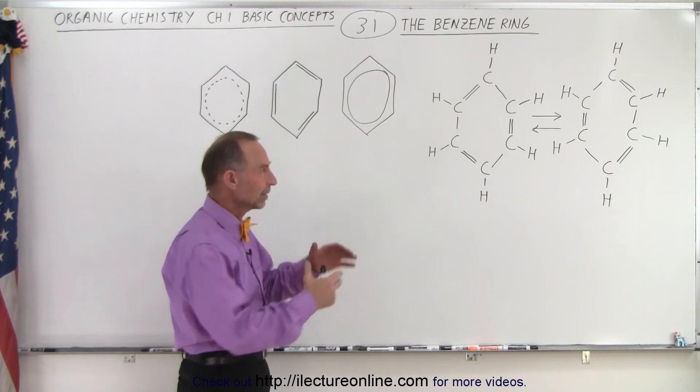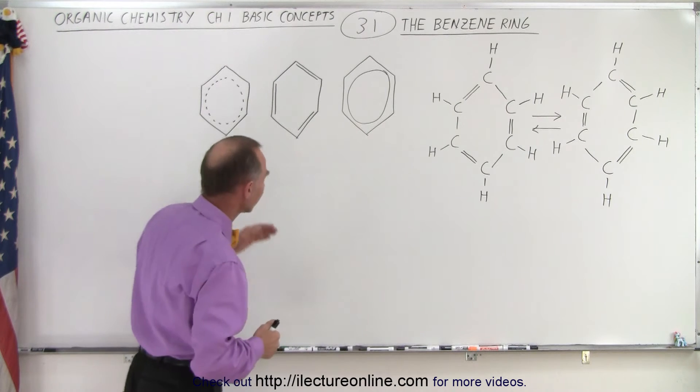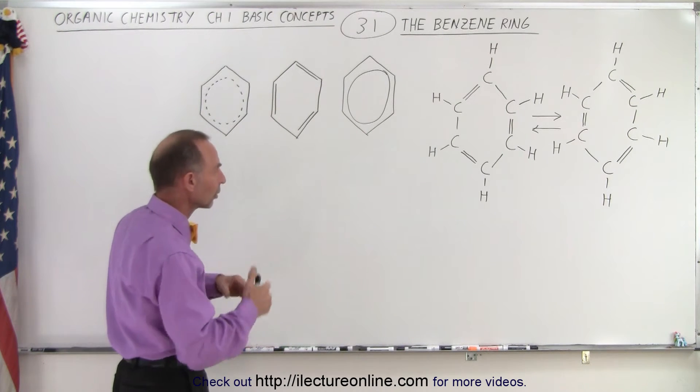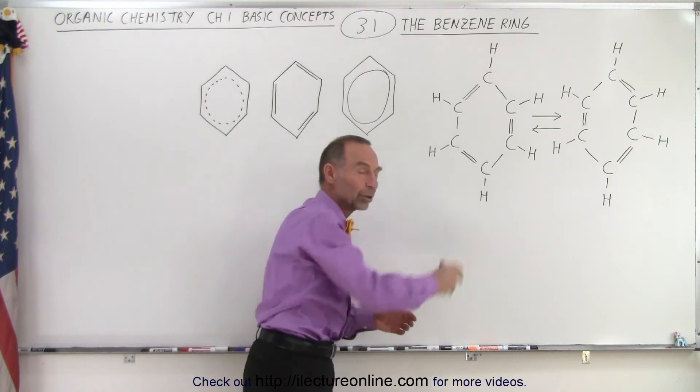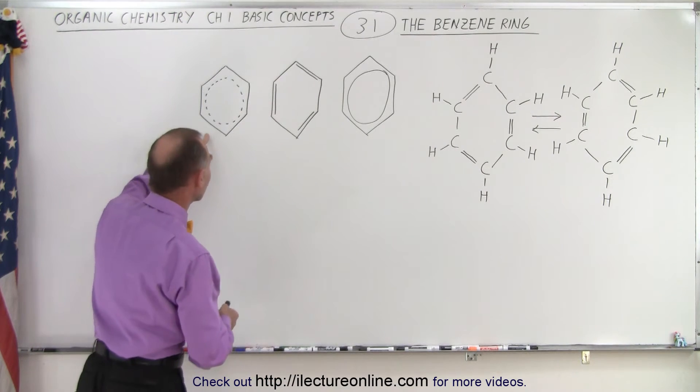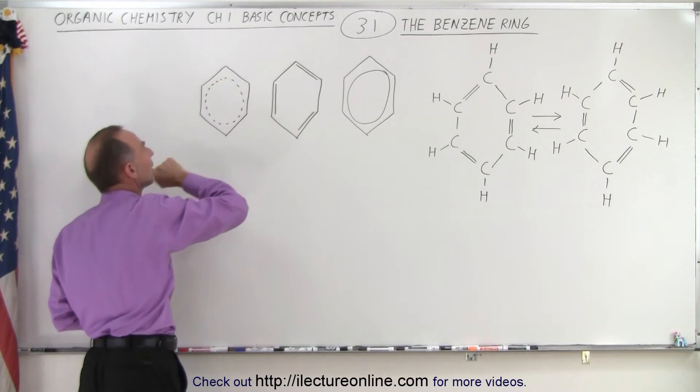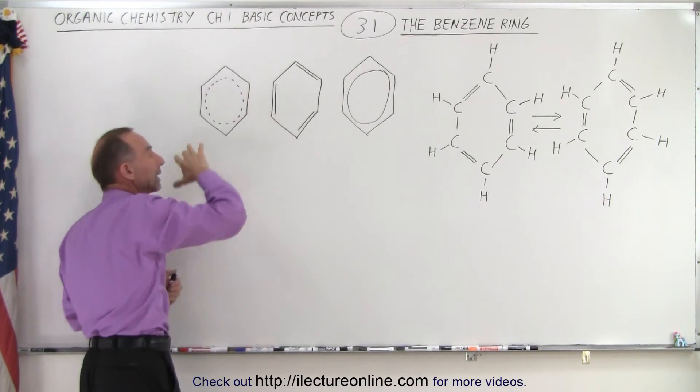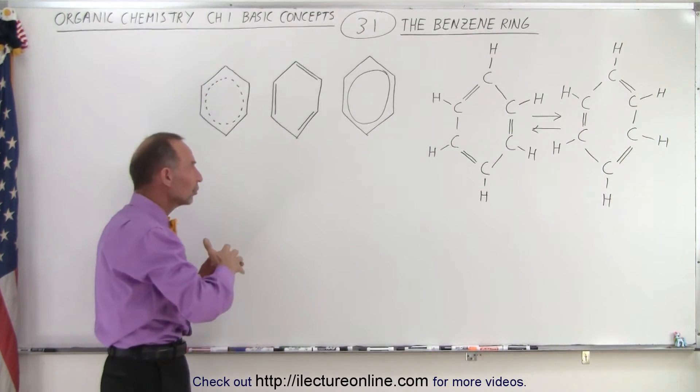Now to simplify the structure when you want to write down what it looks like, because this takes a lot of work, you can simplify the benzene ring symbol by making it look like this. Here you indicate that there's six carbons and this indicates that it's an alternate single to double bond, and that's why we use the dotted line.